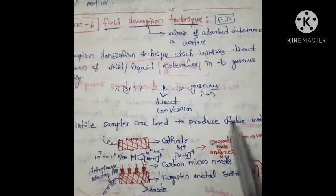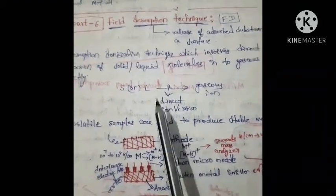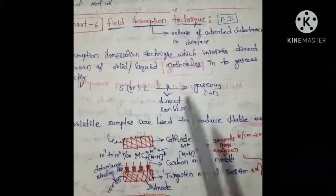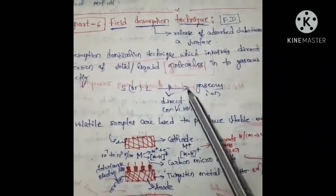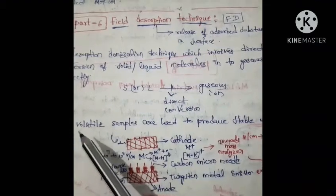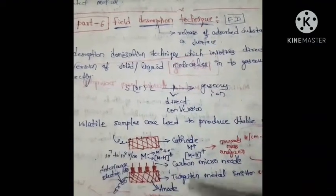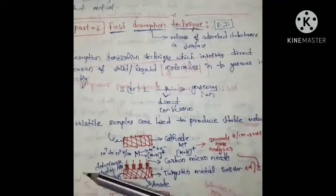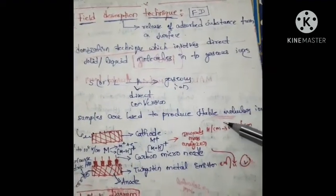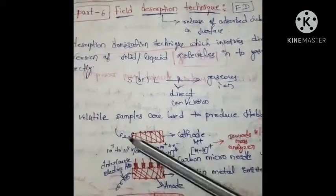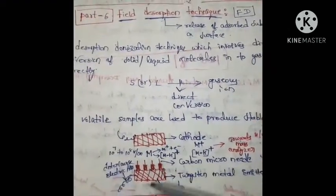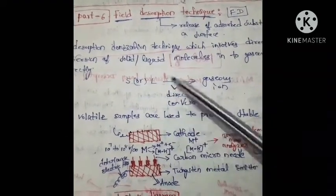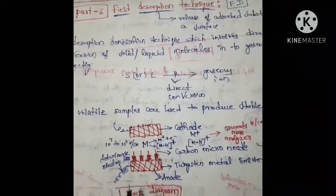To produce stable molecular ions, the samples used here are volatile — that is, samples which have the property of volatility are used to produce the stable molecular ions.